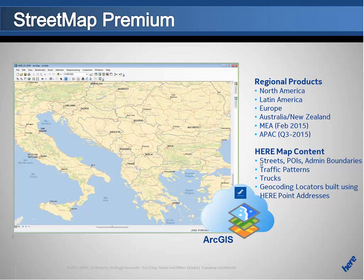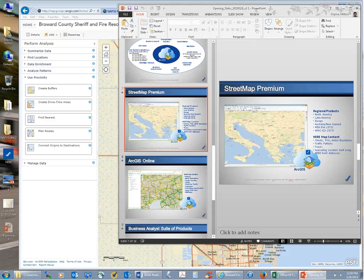Peter: For those interested in HERE data sets, that data is available to state-level agencies at no cost through the National Geospatial Intelligence Agency's HSIP Gold Program. There's a state release — some of that data hasn't been updated recently by NGA but they're about to update it. You can get relatively fresh data from them at no cost; if you have questions on how to access it, reach out to NAPSIG.